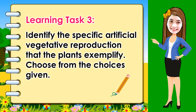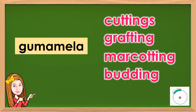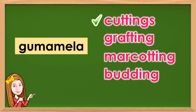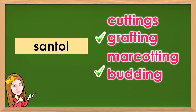Learning Task 3: Identify the specific artificial vegetative reproduction that the plants exemplify. Choose from the choices given. Gumamela — the correct answer is Cuttings. Santol — the answer can either be Grafting or Budding.